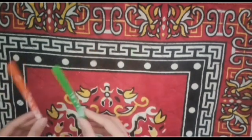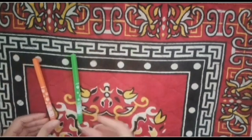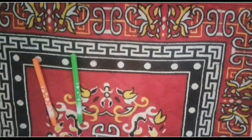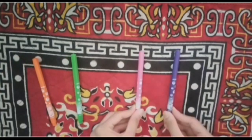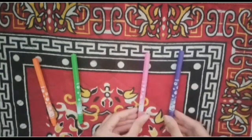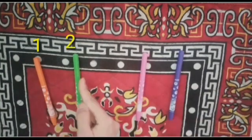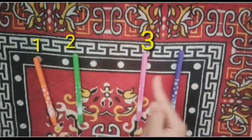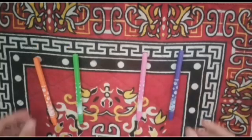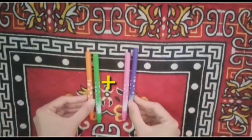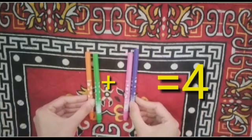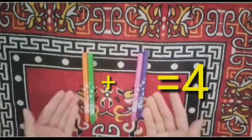Let's take another example. Here I have two sketch pens. My friend gave me two more sketch pens. So how many sketch pens do I have in total? Let's count them. One, two, three, four. So all together I have four sketch pens. So what did we do? We add them.